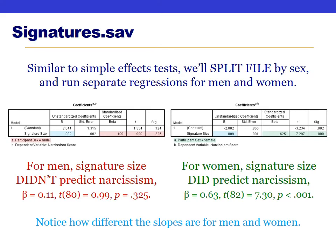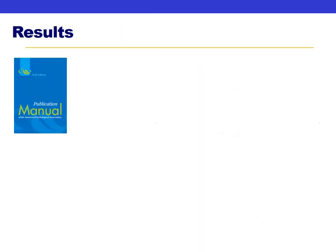Notice how different the p-values, betas, and t-statistics are between the two groups. The relationship for women is significant; the relationship for men is not. Our conclusion is that the relationship between signature size and narcissism depends on sex: for women, having a bigger signature predicts more narcissism, but for men signature size is not related to narcissism.